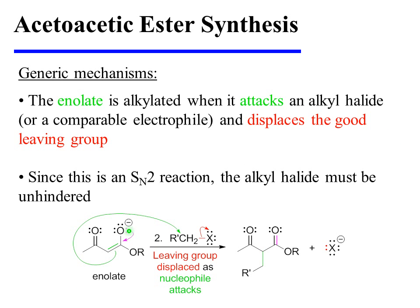The enolate is then alkylated when it attacks an alkyl halide or a comparable electrophile and displaces the good leaving group. Since this is an SN2 reaction, the alkyl halide must be unhindered.